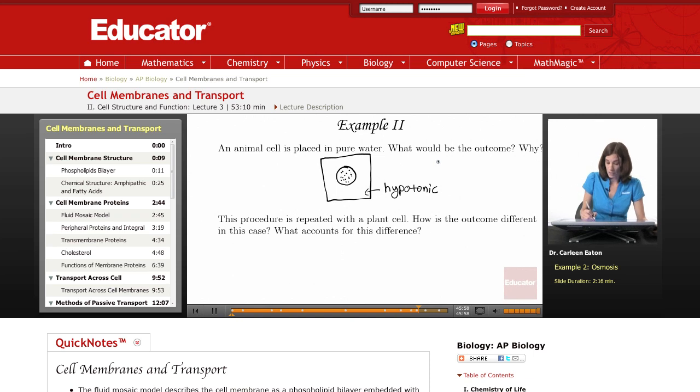Remember that water wants to go from high concentration of water to a relatively low area of low concentration of water. So out here, there's a very high concentration of water because there's relatively few solutes, whereas inside, there's a lot of solutes. So water is going to rush into the cell.